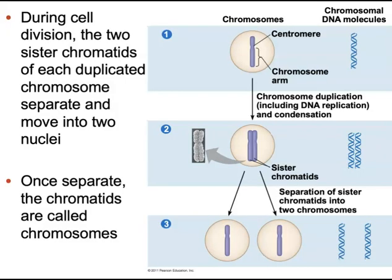Here is a basic model of replication and division. This cell begins with one chromosome consisting of one chromatid. We see on the right the two strands of chromosomal DNA molecules in a double helix for this one chromatid. In box two, the chromosomes have replicated — to the right we see two double helices consisting of four strands of chromosomal DNA. These two chromatids are identical and are called sister chromatids, held together by the centromere. During cell division, the two sister chromatids of each duplicated chromosome separate and move into two opposite nuclei. Once separate, the chromatids are called chromosomes, creating two identical daughter cells with identical genetic material.